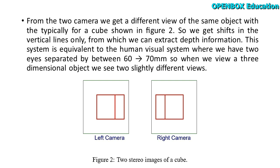This system is equivalent to the human visual system where we have two eyes separated by between 60 to 70 millimeters. So when we view a three-dimensional object, we see two slightly different views.